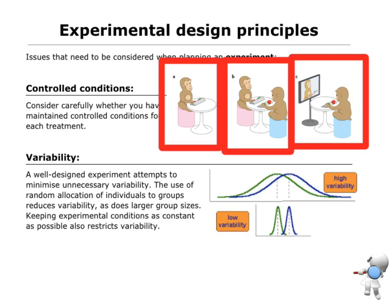So variability is another component. We want to reduce and minimize the variation. And that's why we want to have larger group sizes if possible. We want to keep conditions constant and do all of those things to control things because it is going to reduce the variation.